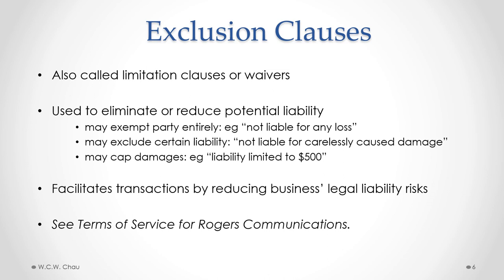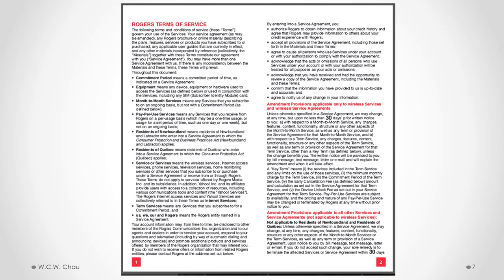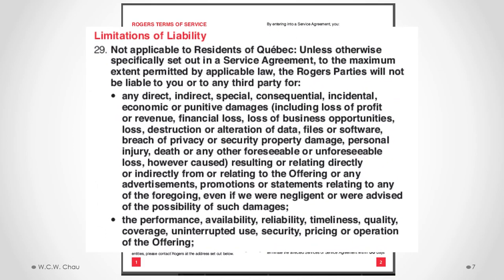For many of our examples, we will look at the Rogers Communications Terms of Service — a contract that some of you may have entered into if you are a Rogers subscriber for your cell phone. The exclusion clause for Rogers is found in Section 29 of that agreement. Here is the Rogers Terms of Service contract — a standard form agreement — and Section 29 is where we find the limitation or exclusion clause. It's a very long clause and I'll just read the first part.